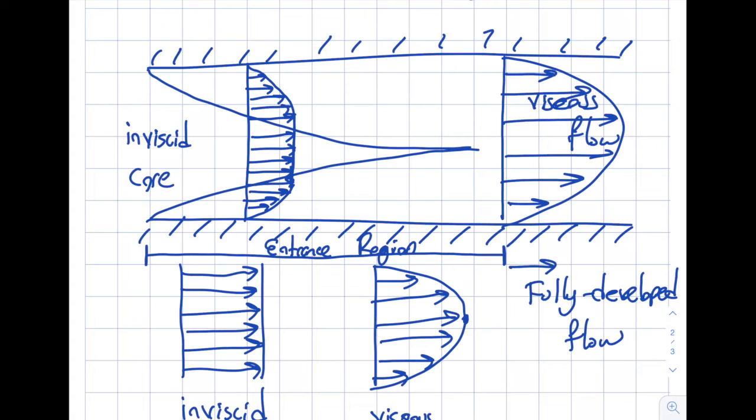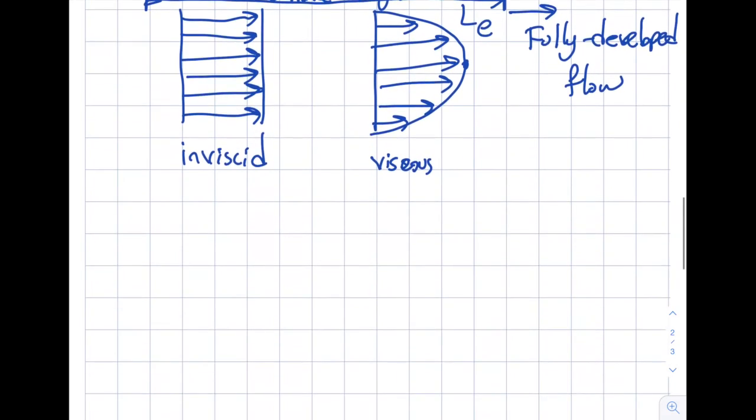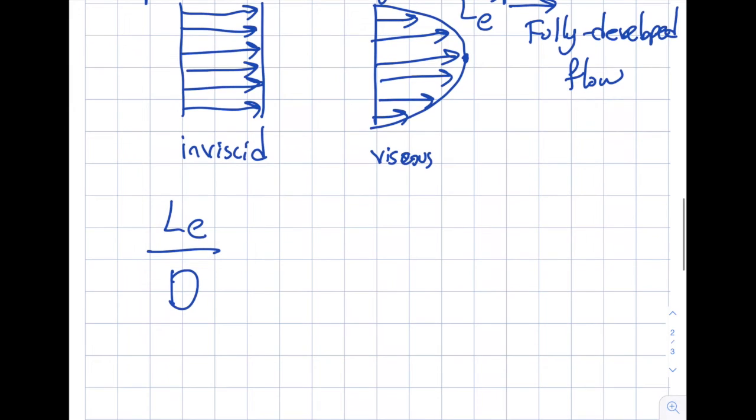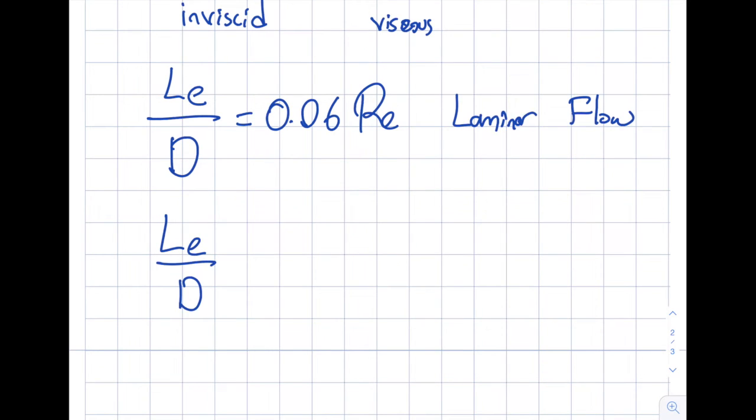When I analyze the fluid flow, it will be much easier. I actually have a length for the entrance region. If I go from here to here, I'm going to call l sub e. This has actually been quantified. I have l_e over diameter equals 0.06 times the Reynolds number for laminar flow. And if I have a turbulent flow, it's going to be 4.4 times Reynolds to the power of one-sixth. This is for the turbulent flow.